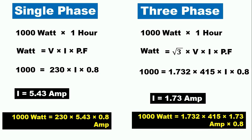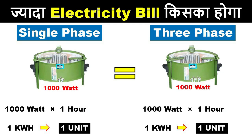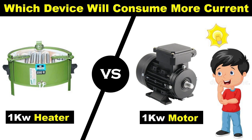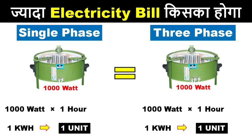Through this video we learned that for single phase, the voltage is low but when connected to equipment it draws more current, which is why the power rating is maintained. Similarly for three phase, voltage is high but current is less, and when we multiply them the calculated power equals that of single phase. In both cases energy consumption is equal. If you want to know which draws higher current — a 1 kilowatt heater or a 1 kilowatt motor — click on the video on the right. Please like, share, and comment on this video, and subscribe to the channel if you haven't yet.